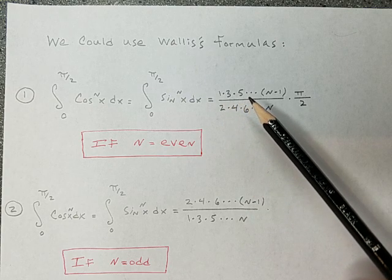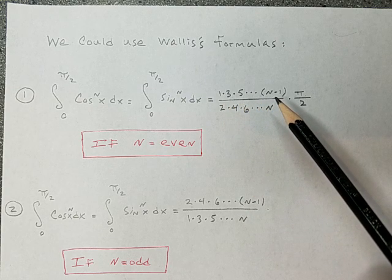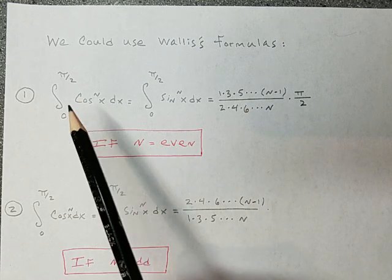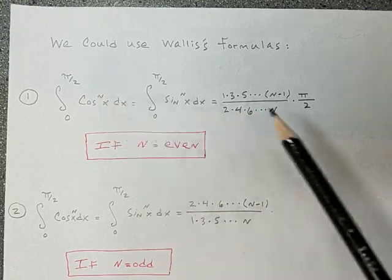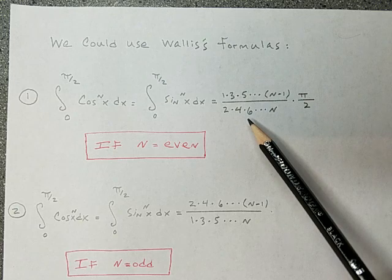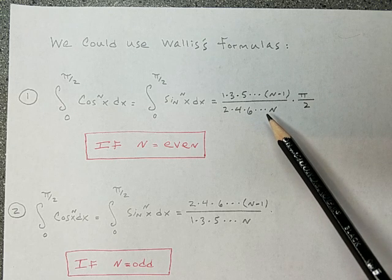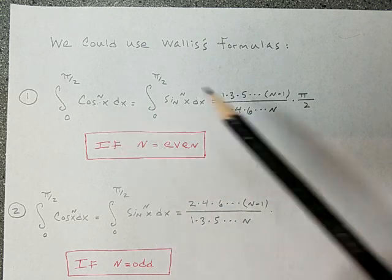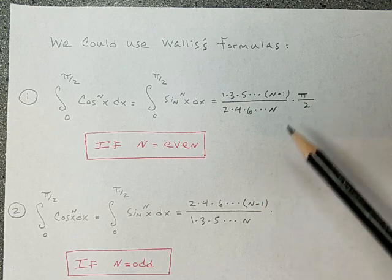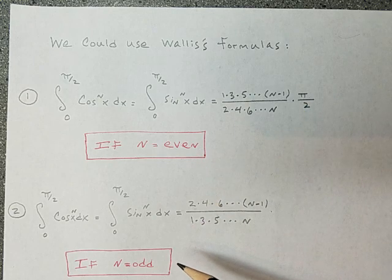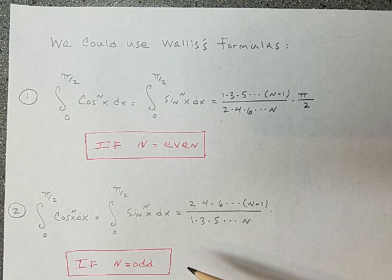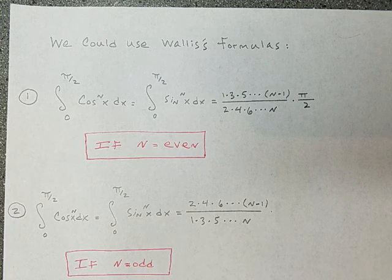1 times 3 times 5 consecutively up to the power n minus 1, 1 less than whatever the original power is, over 2 times 4 times 6, you see a pattern there all the way up multiplied to n, which is the original power. So you'll decide whether you're starting with an even power or odd power, and those are the formulas that we could use for this one.